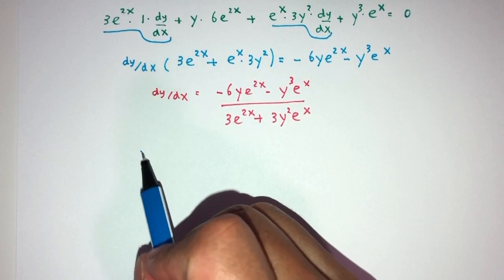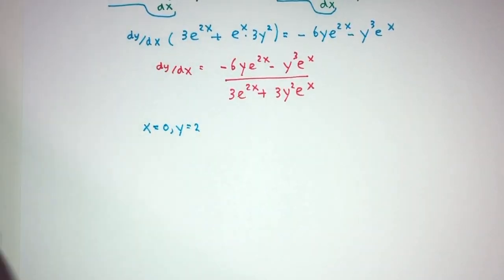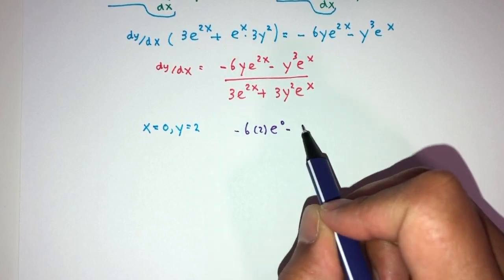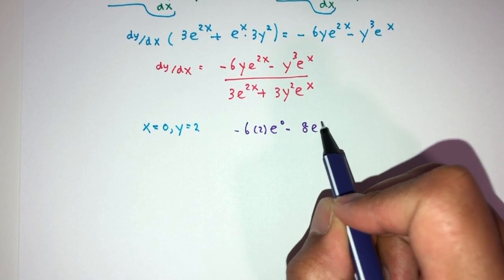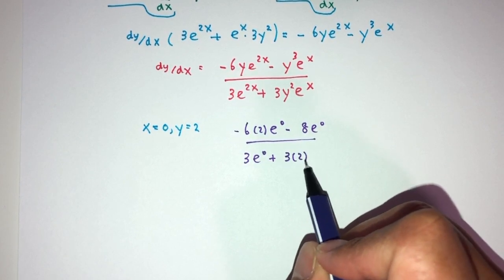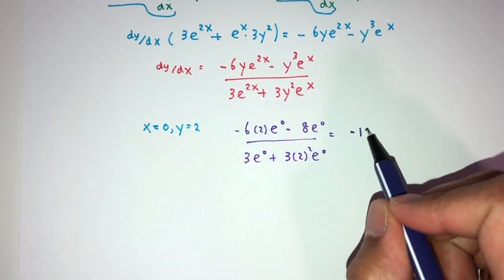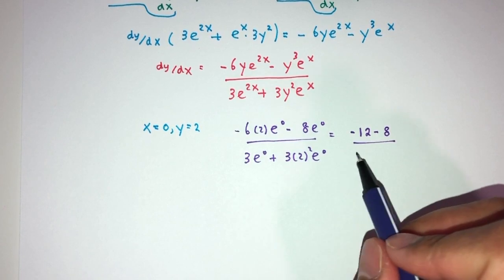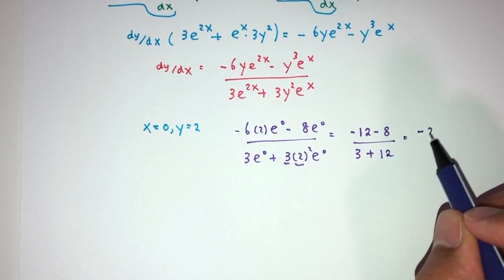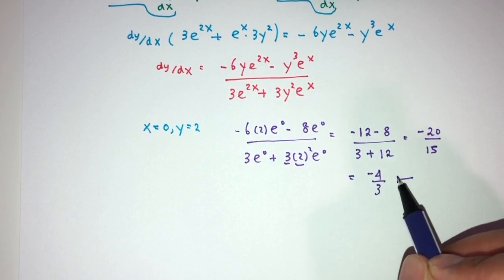We have to evaluate this value when x equals 0 and y is 2 from this point. Just replace and see what happens. You have minus 6 times 2 exponential 0 minus y is 8 exponential 0 divided by 3 exponential 0 plus 3 times 2 squared exponential 0. Simplify. Anything power 0 is 1. That will be minus 12 minus 8 divided by 3 - this is 3 times 4 is 12 - that will be minus 20 over 15. Divide by 5: minus 4 over 3. This is your answer.